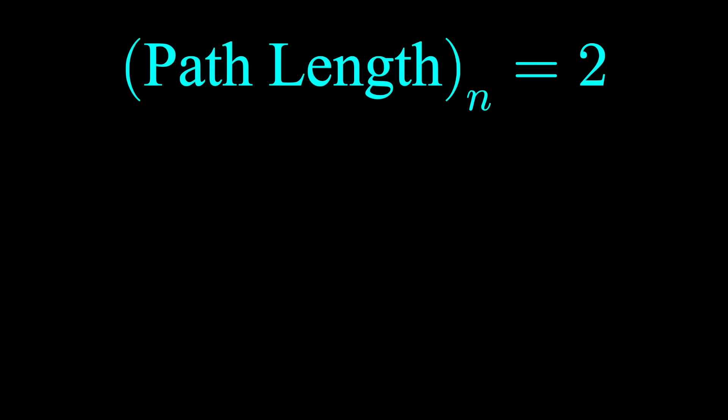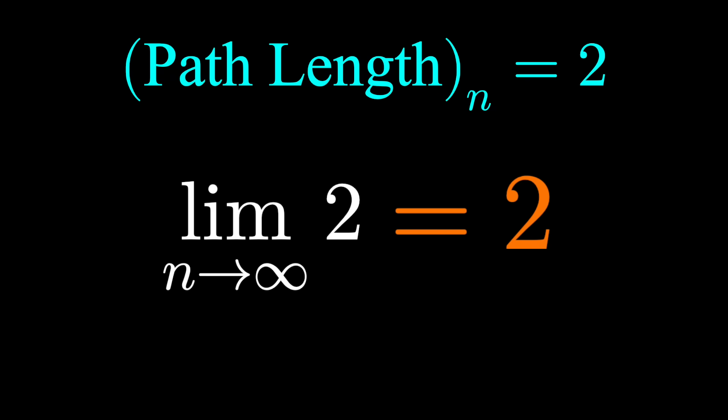Our path length is 2, regardless of what the iteration number is. And if we take the limit out to infinity, the limit of a constant is a constant. We still get 2.